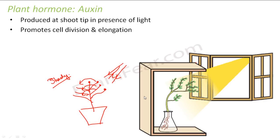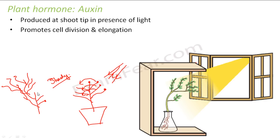The purpose of auxin is to cause cell division and elongation. On the shady side, auxins cause the cells to increase in number and size, so growth is more on the shady side. The plant on the shady side starts growing more. But growth on the brighter side is less. When this side grows too much, gradually the pressure on the shady side increases and the plant starts bending towards the direction of light.